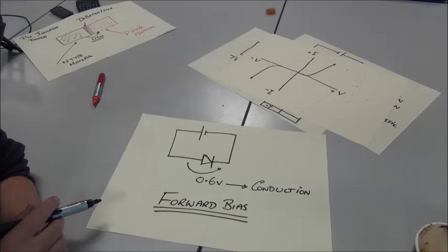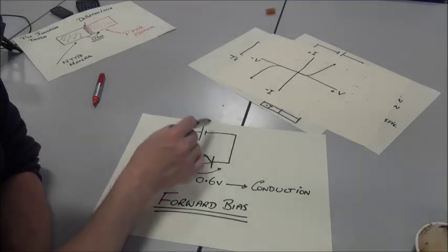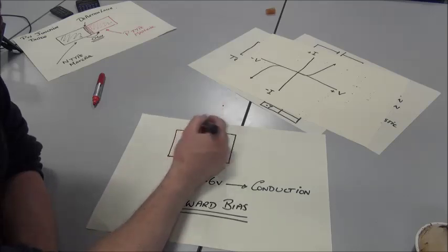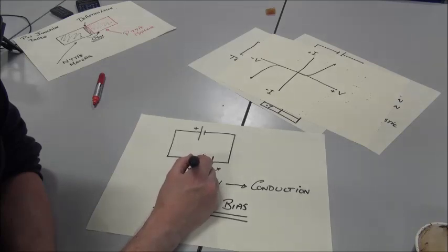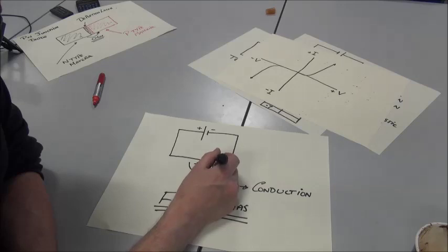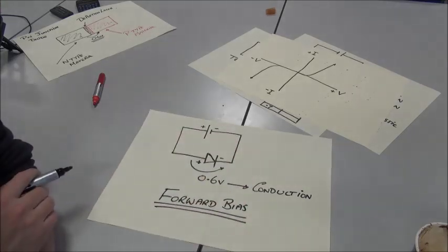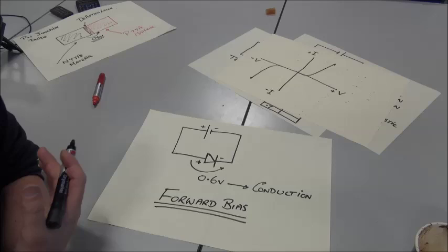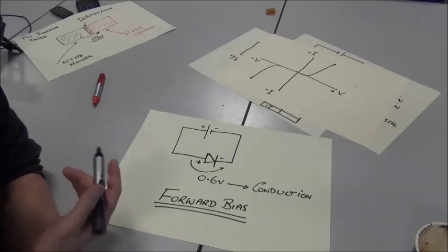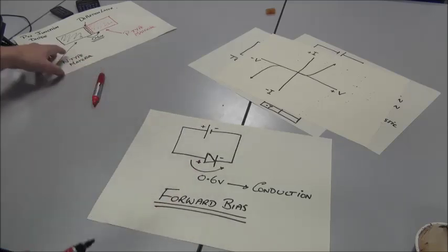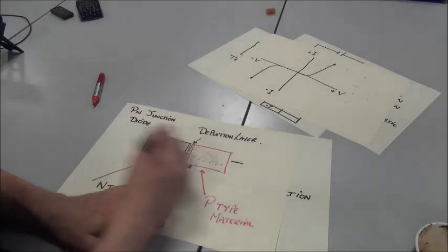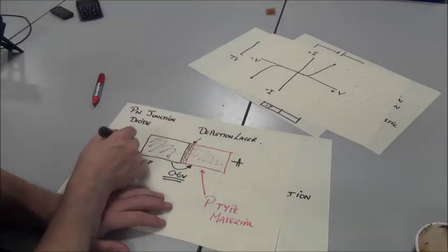Effectively, there are two ways of connecting the diode up. We have a DC supply here. If we connect the positive terminal to the P-type material of the diode, and the negative terminal of the supply to the N-type material, you will know from magnetics that like poles repel. Well, the same type of thing happens in electronics.